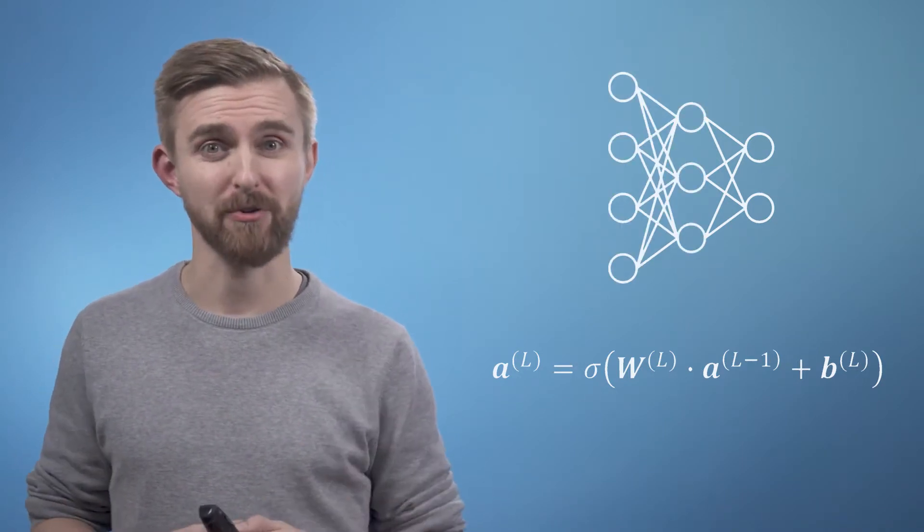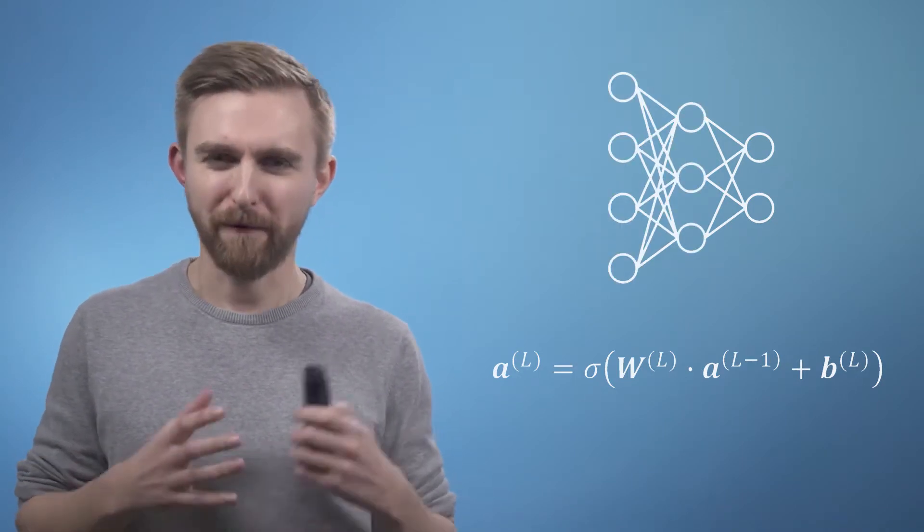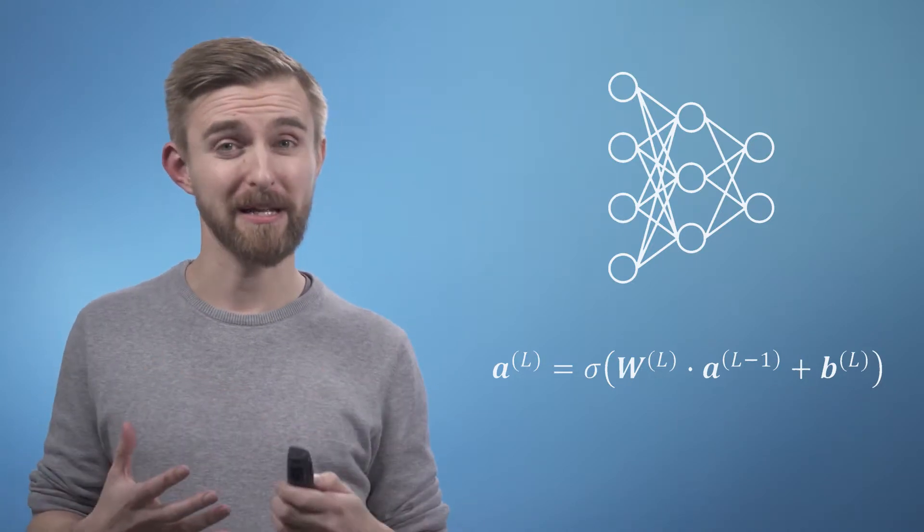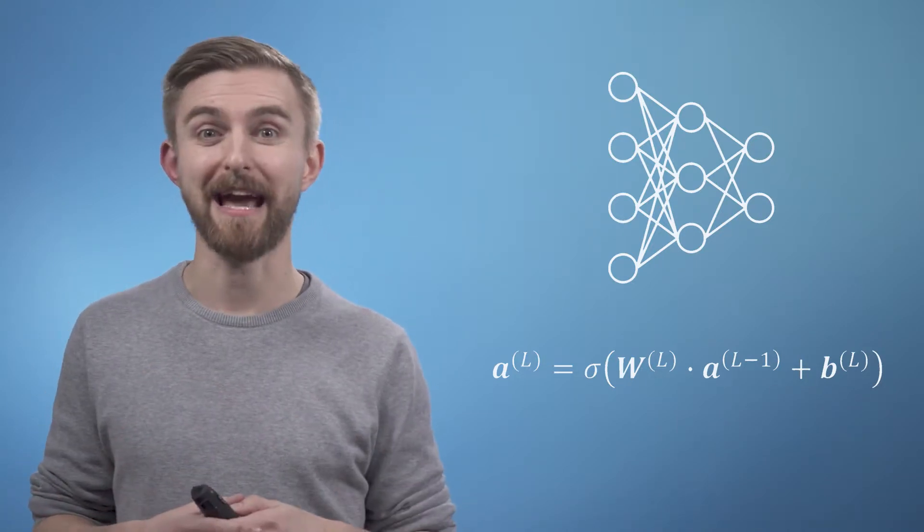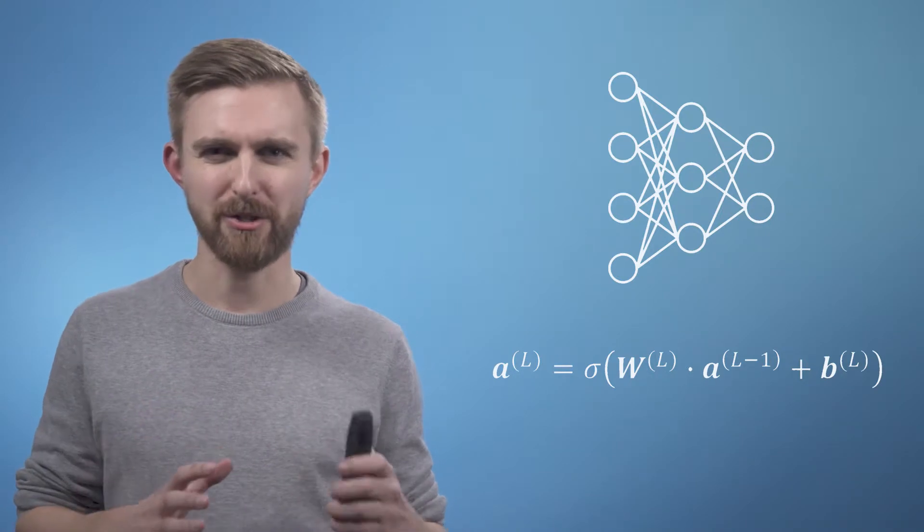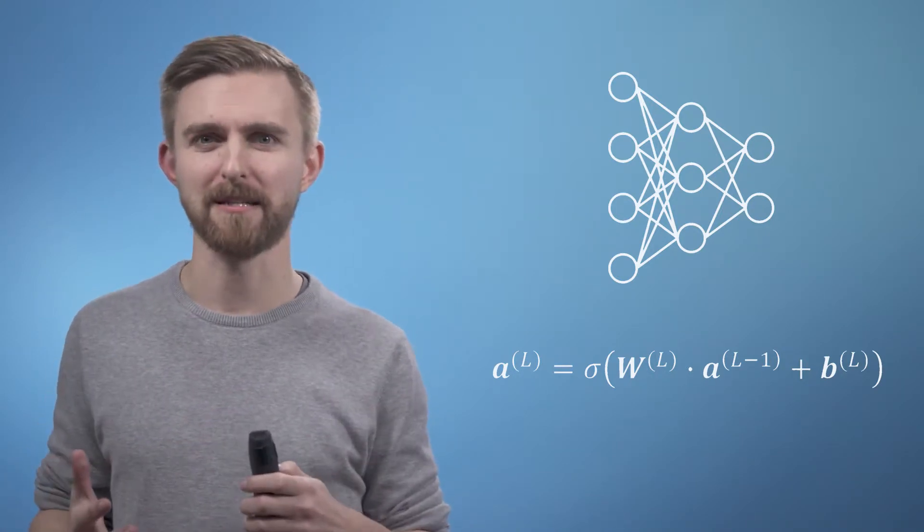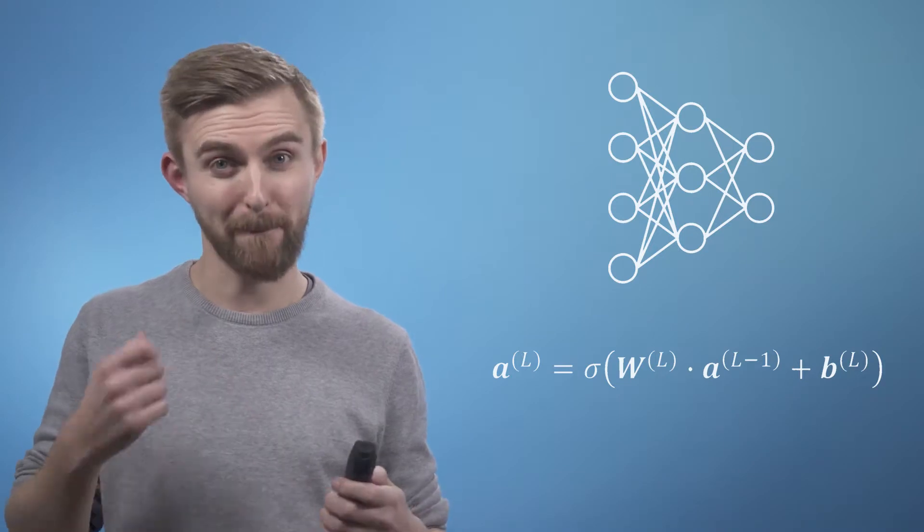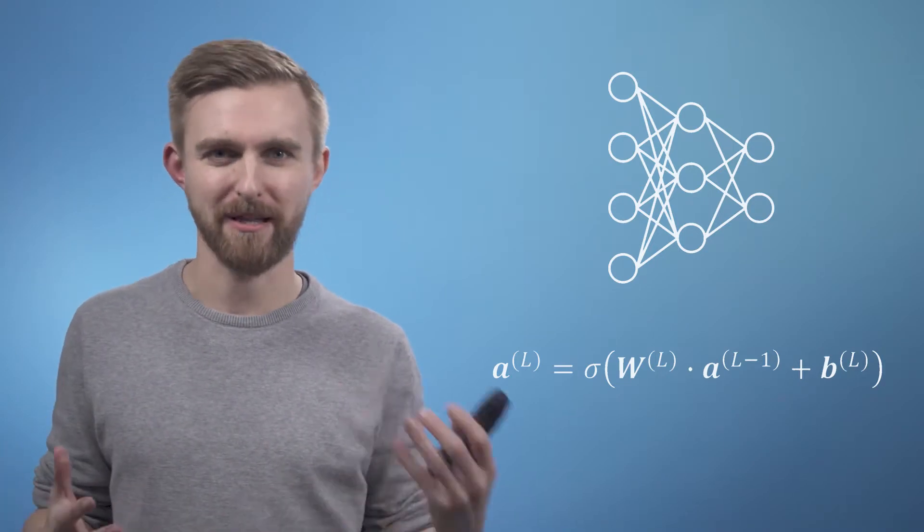If we start by choosing a simple structure such as the one shown here with four input units, three units in the hidden layer, and two units in the output layer, what we're trying to do is find the 18 weights and five biases that cause our network to best match the training inputs to their labels.